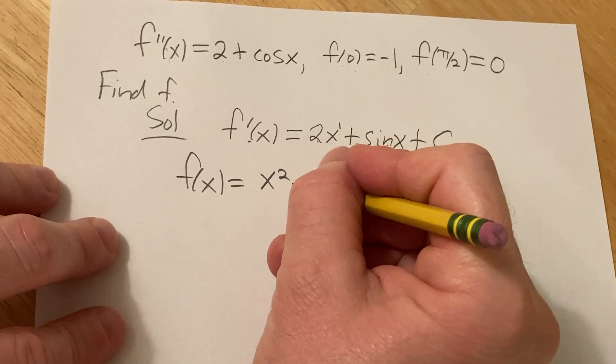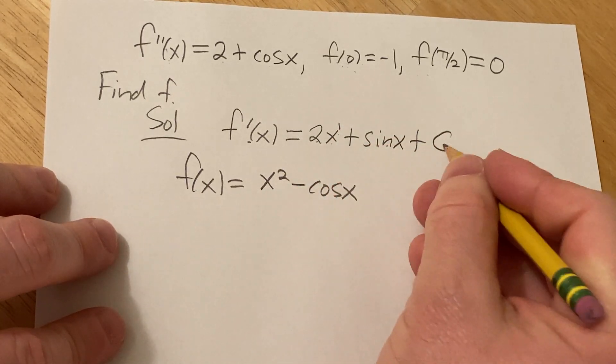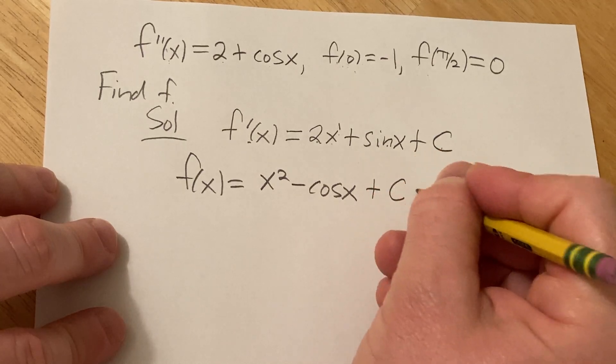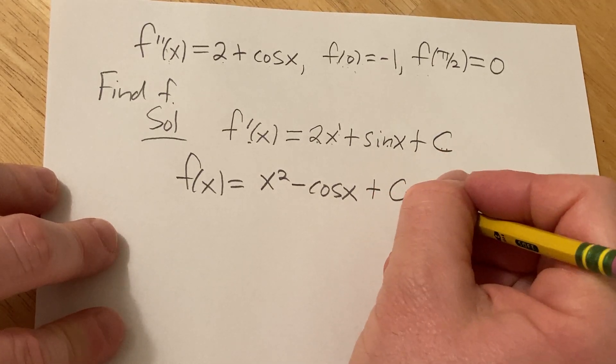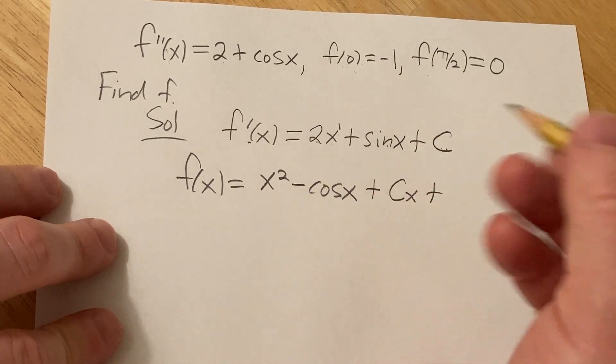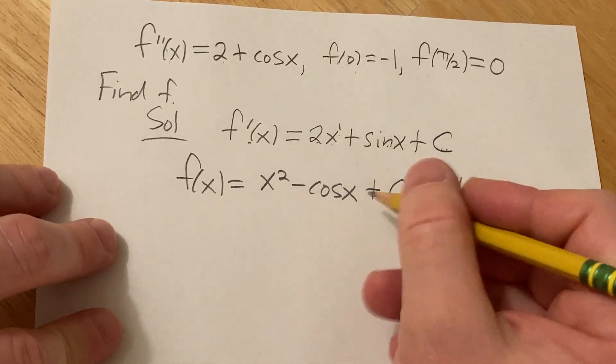Integrating sine, you're going to get negative cosine. And then here we have plus c times x. Because it's a constant, so you put an x. Plus a constant of integration, which I'll call k. You can't call it the same thing.